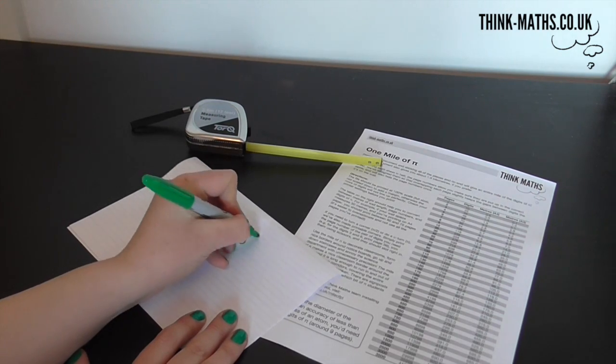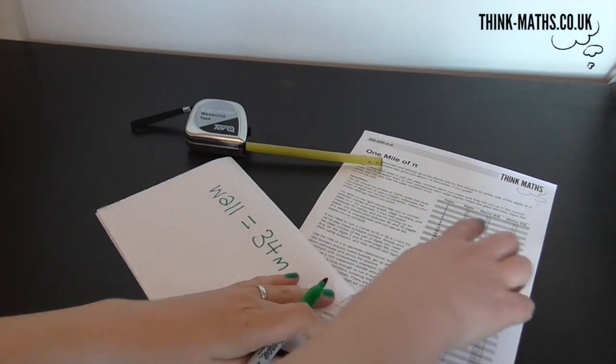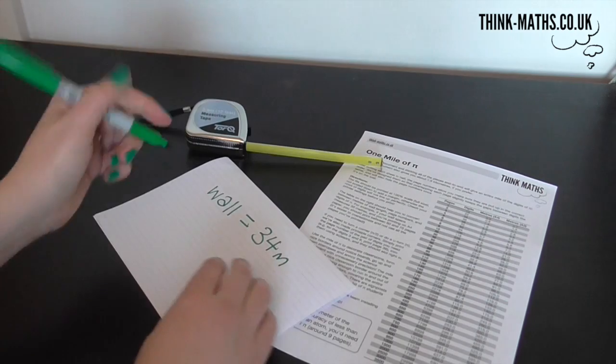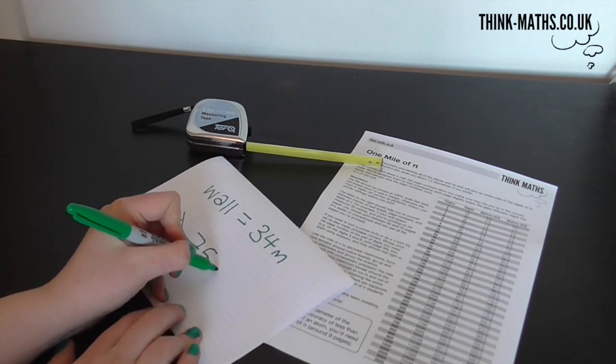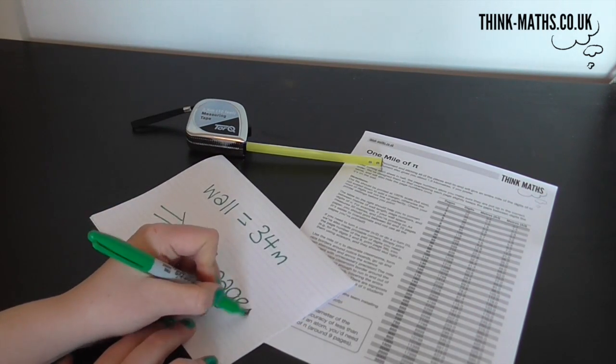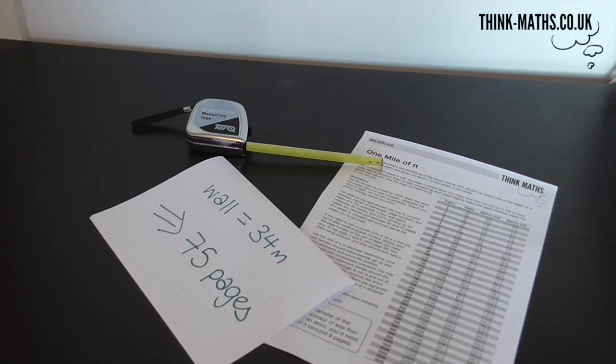The first thing you need to do is work out how many digits of pi you need. If you measure the length of wall you'd like to cover in metres, then decide whether you'll be printing on A4 paper or super serious A3 paper, you can use this conversion chart to work out how many pages you want.